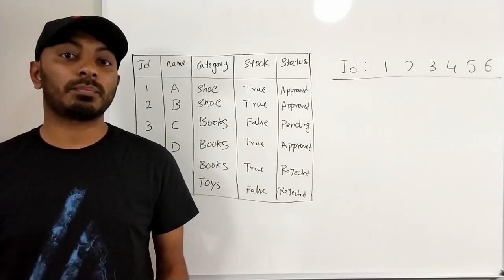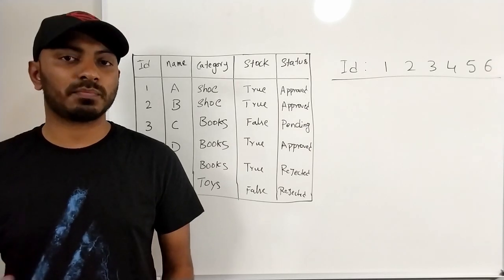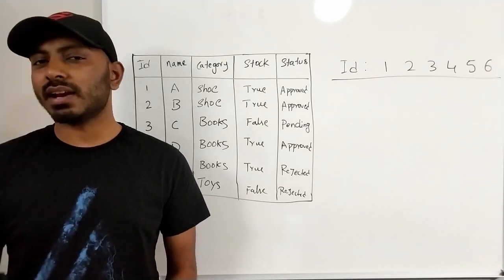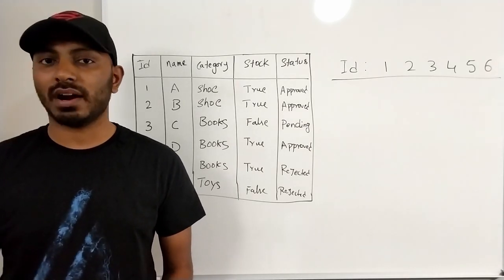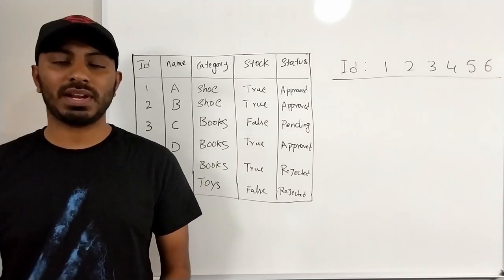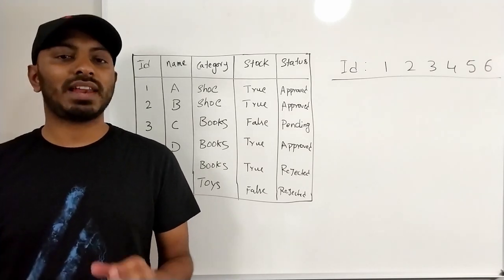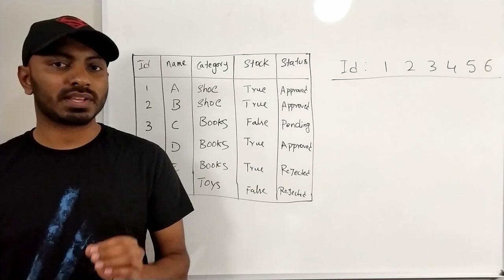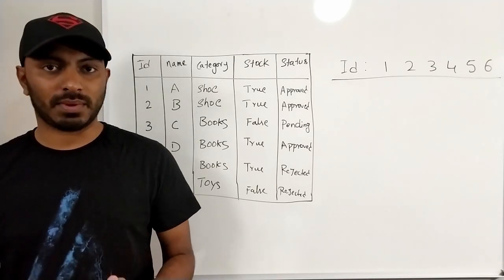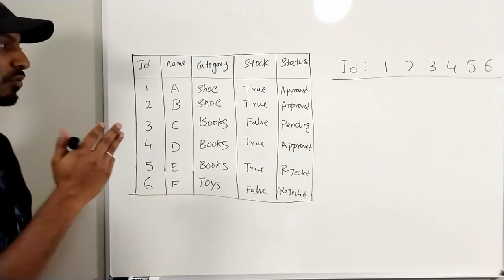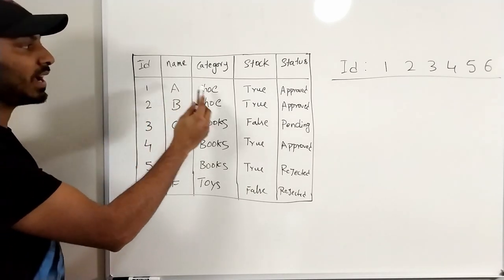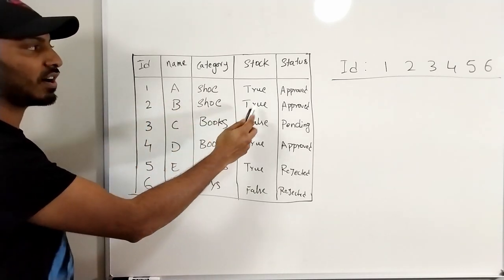There are cases where B+ tree and AVL tree perform much better when indexing a database. But there are situations where bitmap indexing will outperform B+ tree and B-tree. Let's understand these concepts by taking an example of a product database. Suppose we have a product database which has columns: ID, name, category, stock, and status.